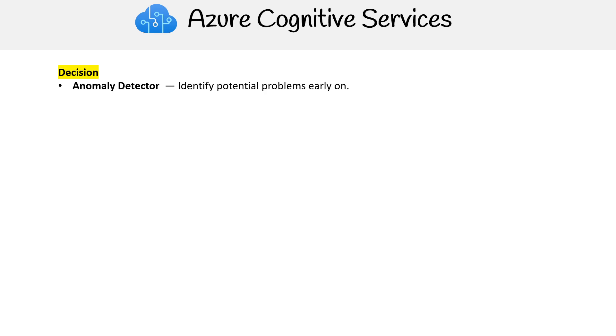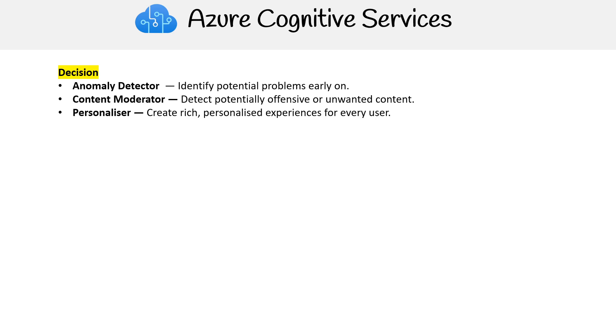For decision services, we have Anomaly Detector — identify potential problems early on. Content Moderator — detect potentially offensive or unwanted content. And Personalizer — create rich, personalized experiences for every user.